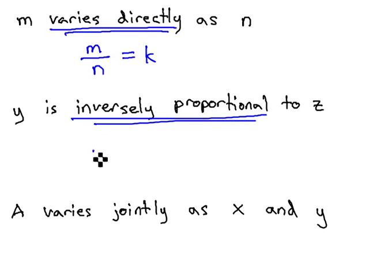When we see inversely proportional, we want to multiply our variables, y times z, to always equal a constant.